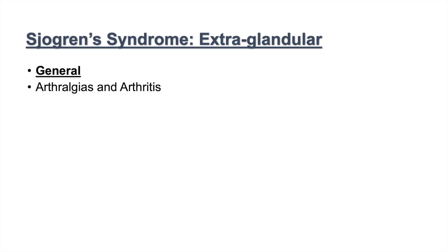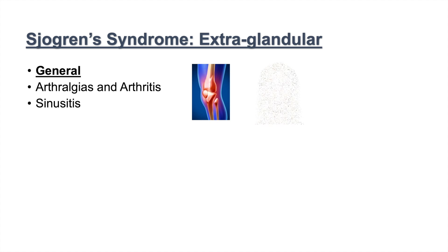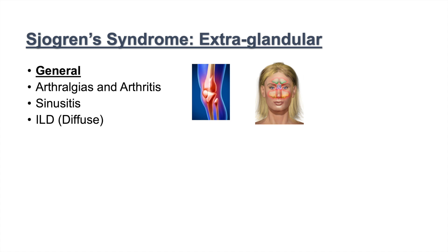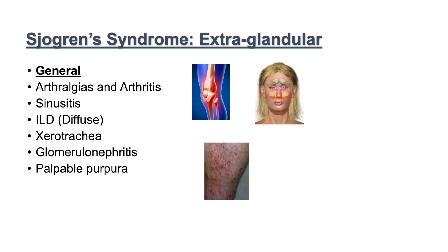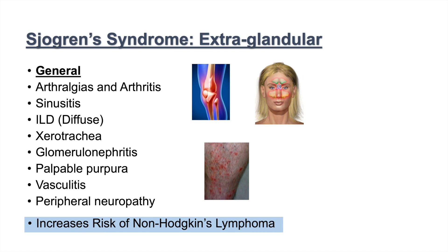The extra-glandular manifestations can include arthralgia and arthritis — the third symptom in our triad — but also sinusitis, interstitial lung disease (ILD) in a generally diffuse pattern, xerotrachea (dryness in the trachea), an increased risk for glomerulonephritis, palpable purpura, vasculitis, and peripheral neuropathy. Having Sjogren's syndrome also increases your risk of non-Hodgkin's lymphoma later in life.